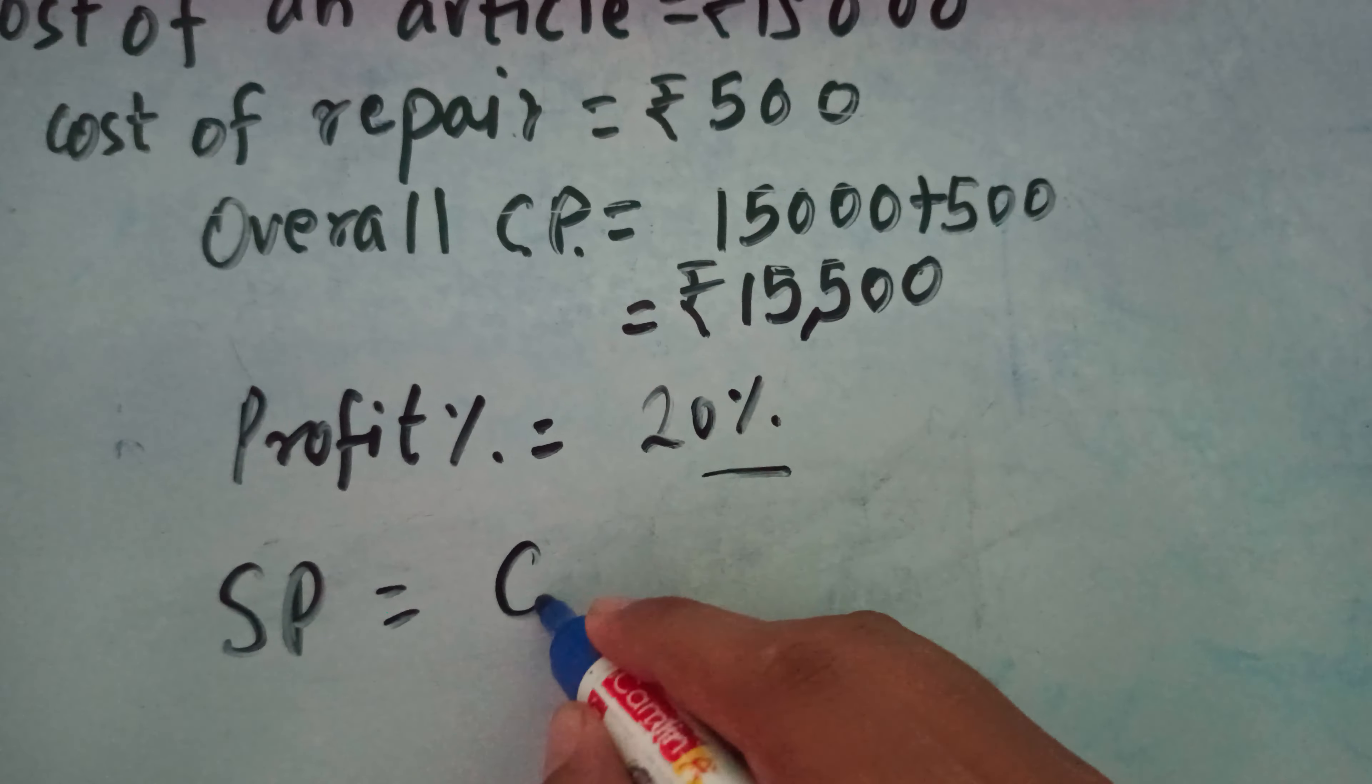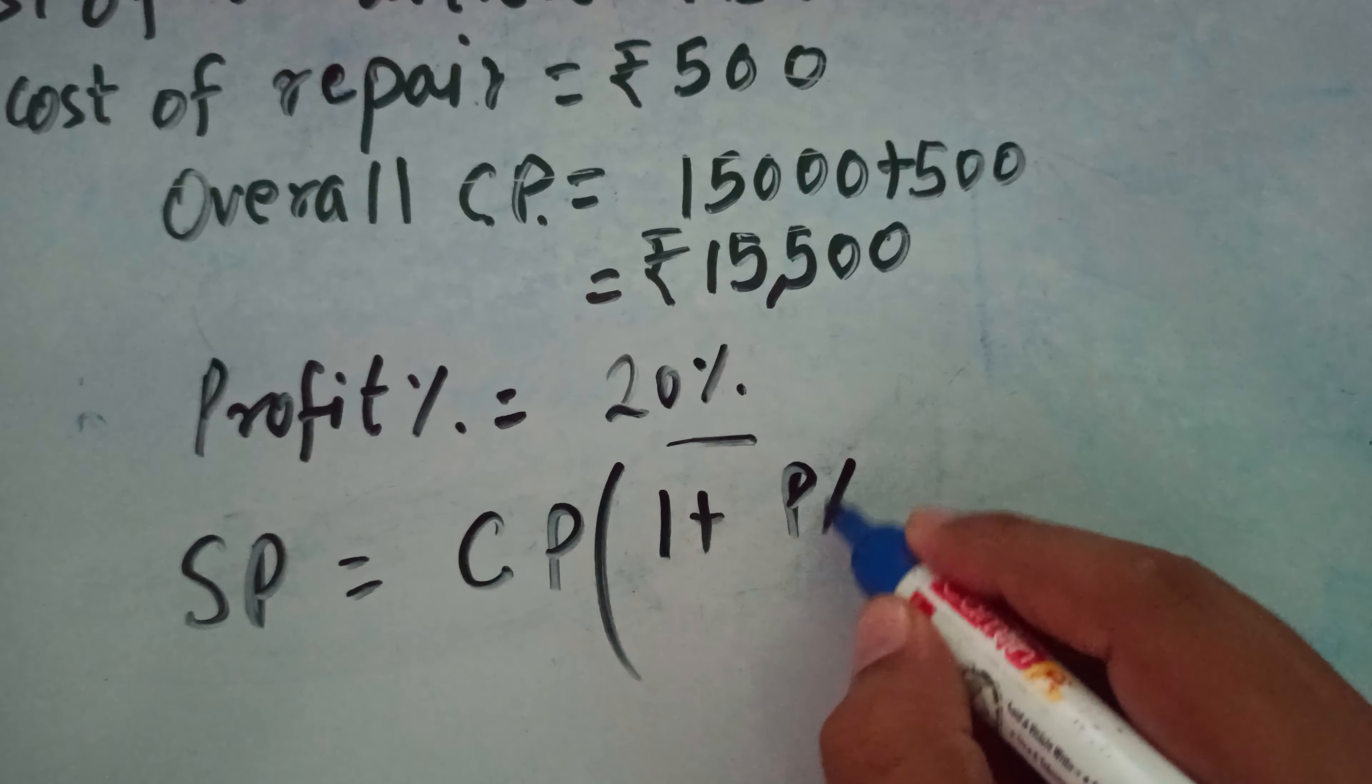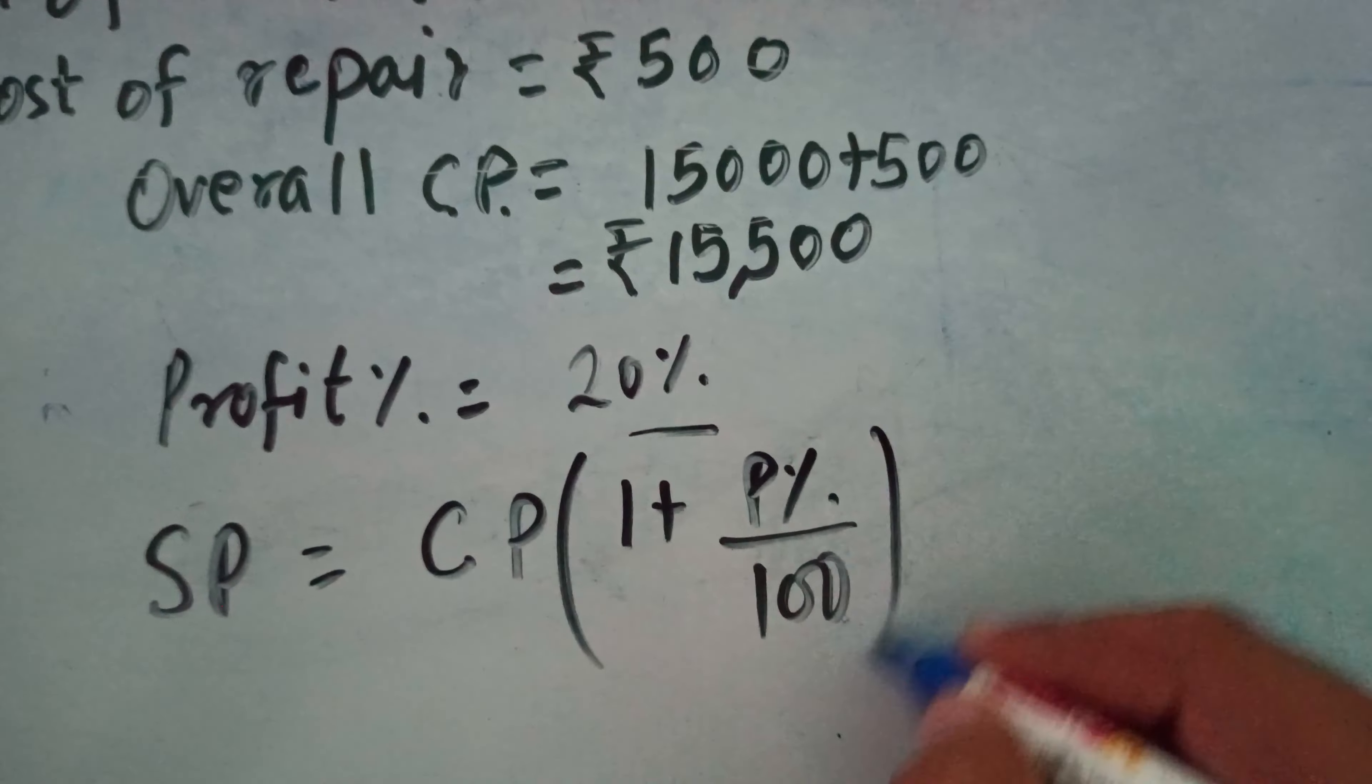How to find it? If we need to find SP and CP and profit percent are given, then the formula is CP multiplied by (1 plus P%/100). This is the formula.